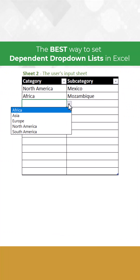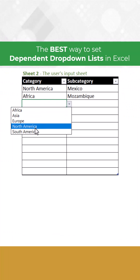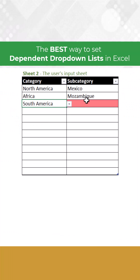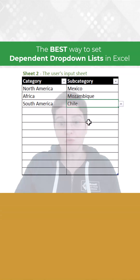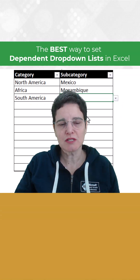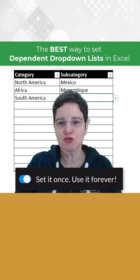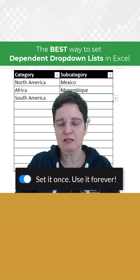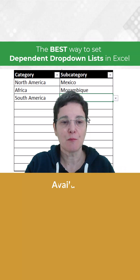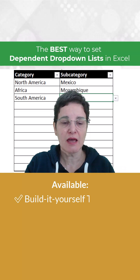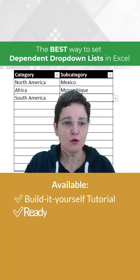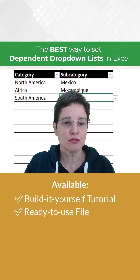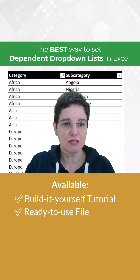If we come here, we now have under South America the option Chile. You only need to set these ones, and once this structure is built, you can manage, add, delete, and modify all the categories you need through this table.